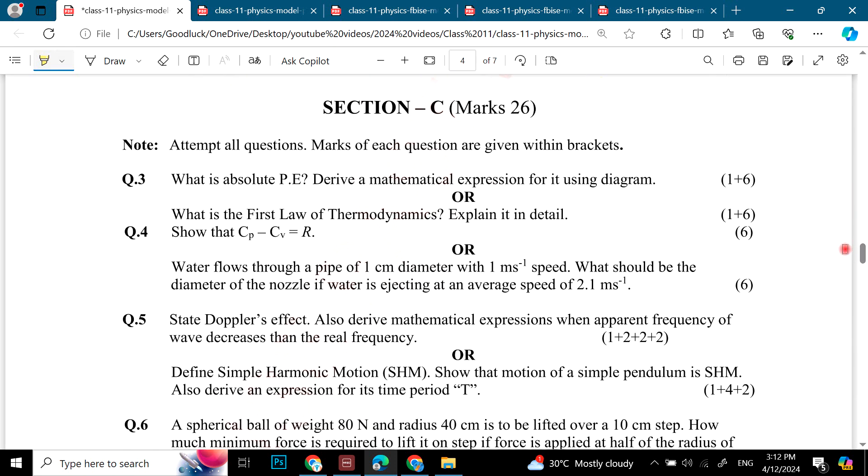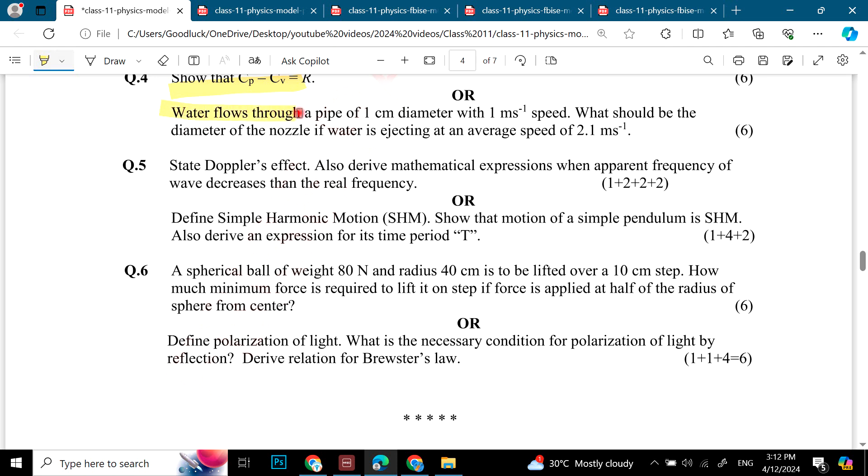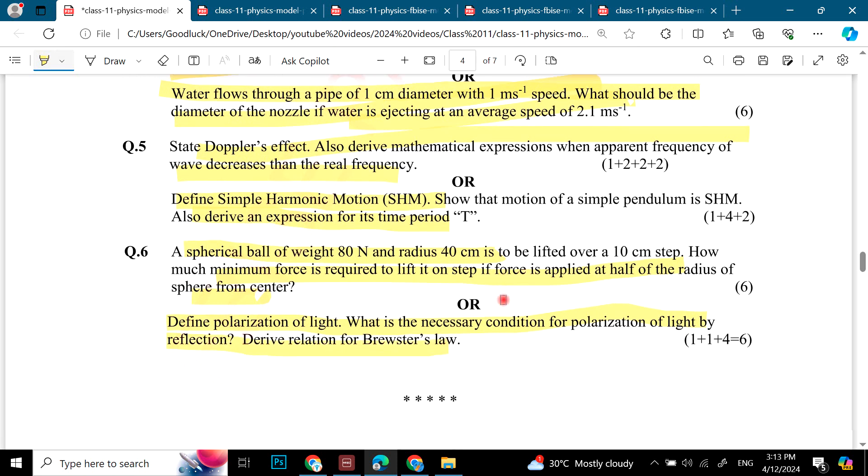And their numbering is mentioned. Long questions we have to answer: What is absolute potential? Chapter number 4. First law of thermodynamics, explain in detail. Last chapter, 10th chapter: CP minus CV is equal to R. Last chapter again. Water flow through a pipe of 1 centimeter with 1 meter per second speed. This is numerical. Doppler effect. 7th chapter or 8th chapter I think. Define simple harmonic motion. A spherical ball of weight 80 newton, radius 40 cm. This chapter includes: define polarization of light. What is the necessary condition for polarization by reflection? Derive relation for Brewster's law. This will come in chapter number 9.